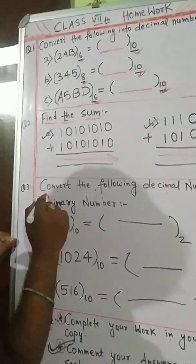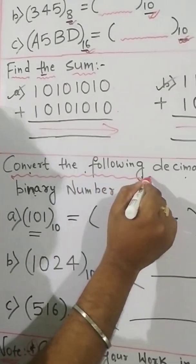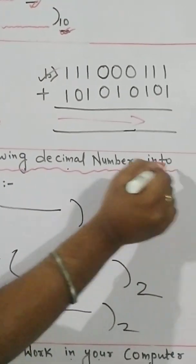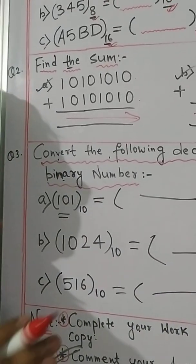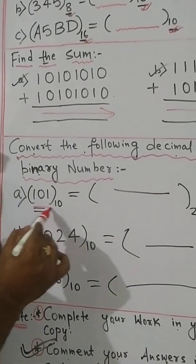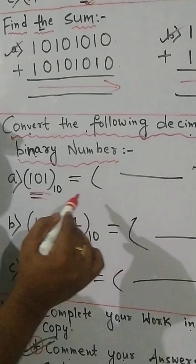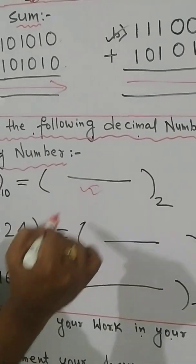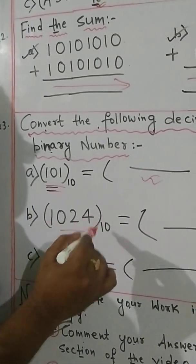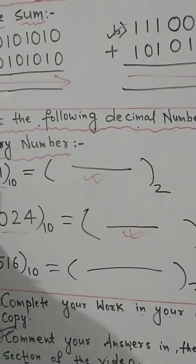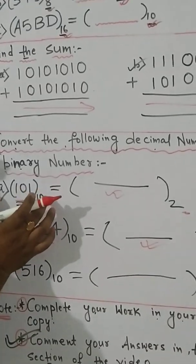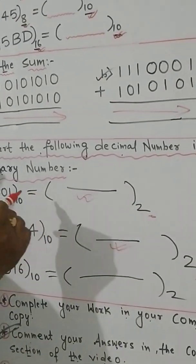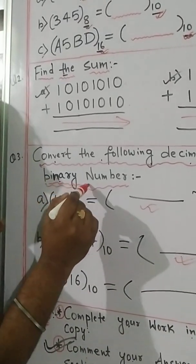Now the third one is convert the following decimal number into binary number. You have to convert all the numbers into binary. The first one is decimal, that is 101. You have to convert and write your answer over here. The second one you have to convert again and write the answer over here. The base is 2. That means this number is decimal and you have to convert into binary. It is also mentioned here in the question.